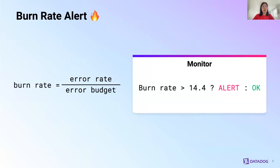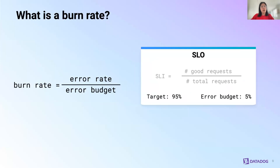A burn rate alert is a little bit more complex and also requires an SLO. To calculate the burn rate, you divide the error rate over the error budget. In this example, we have a burn rate alert that triggers at a burn rate of 14.4. At a high level, it represents how fast the error budget is burning — it's the ratio of the error rate over the error budget. An error budget is just a budget you have before your SLO is breached. In this case, we have an SLO with a target of 95%, so the error budget would be 5%.